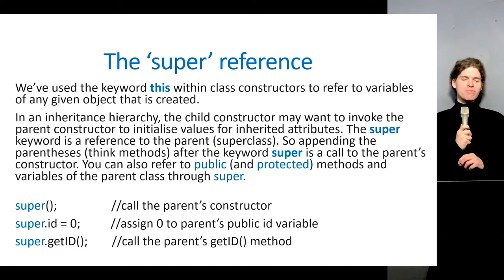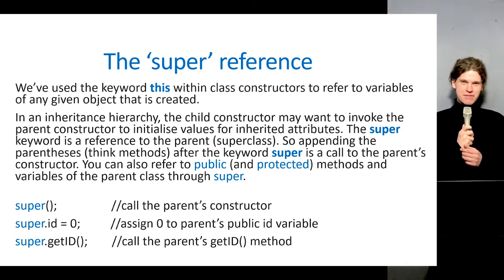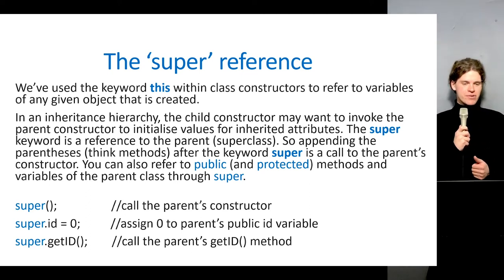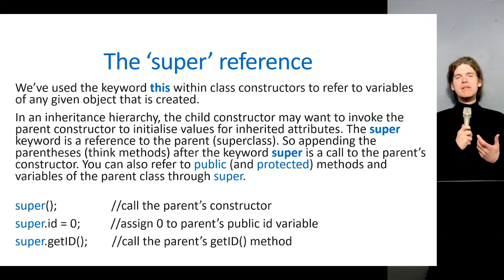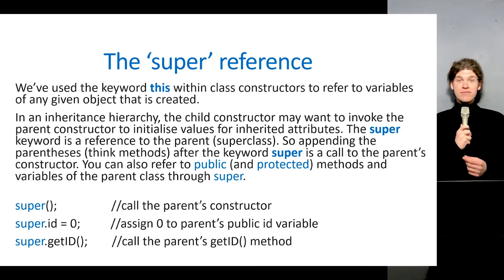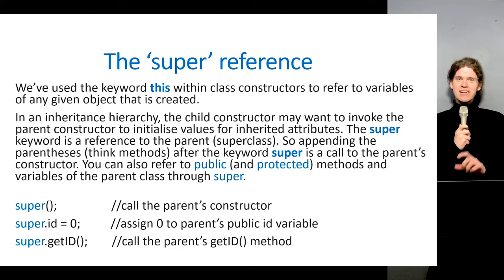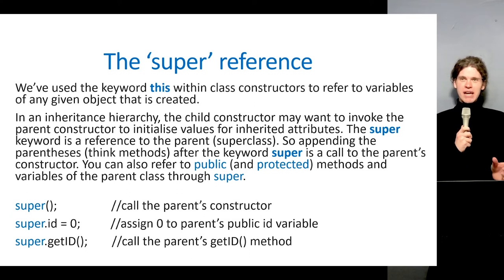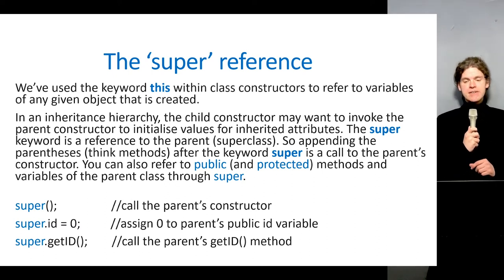A good reference point for super is the keyword this, which we use within class constructors to refer to the variables of any given object being created. It's a placeholder that can later be substituted with a specific instantiation of a class — we don't want to code specific object names because the method or constructor would then only ever operate on that defined object.